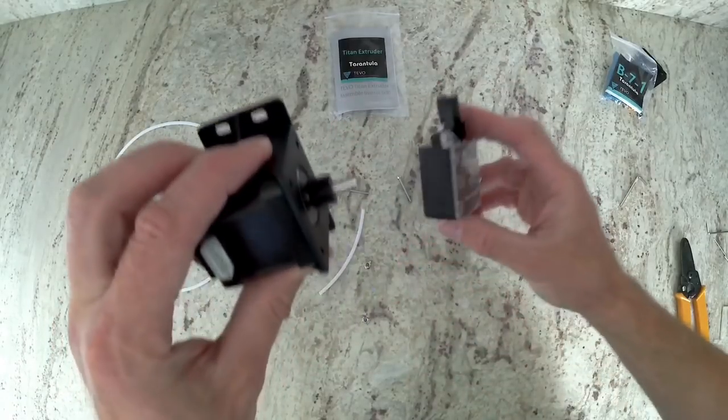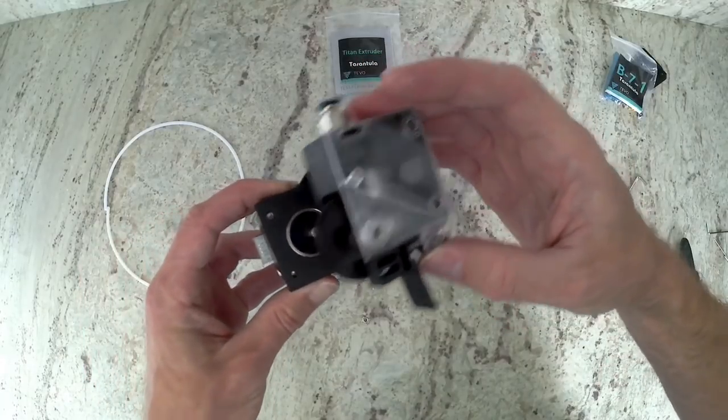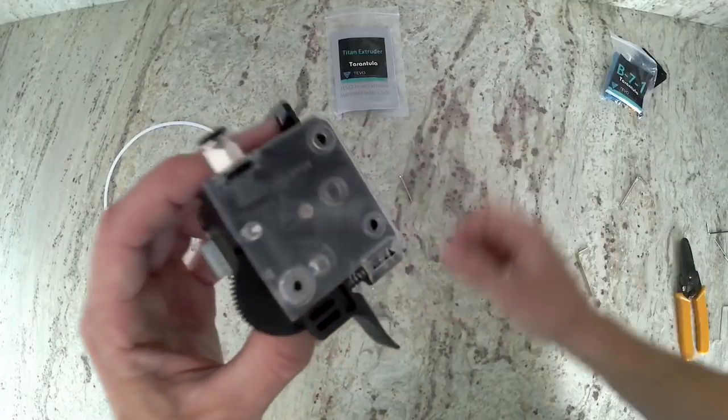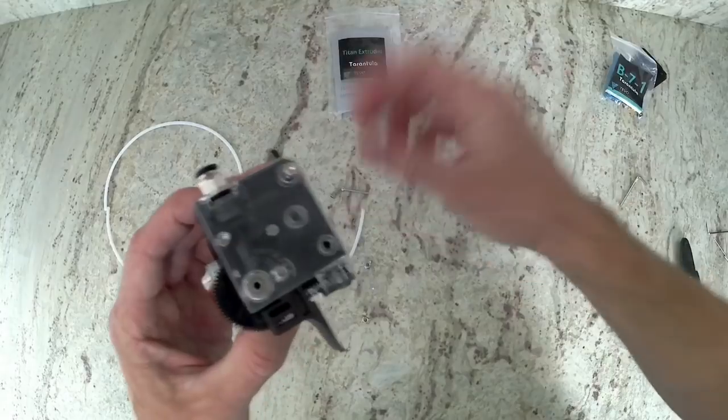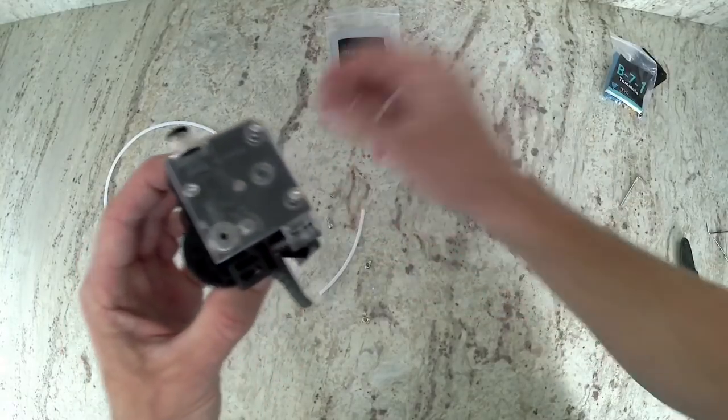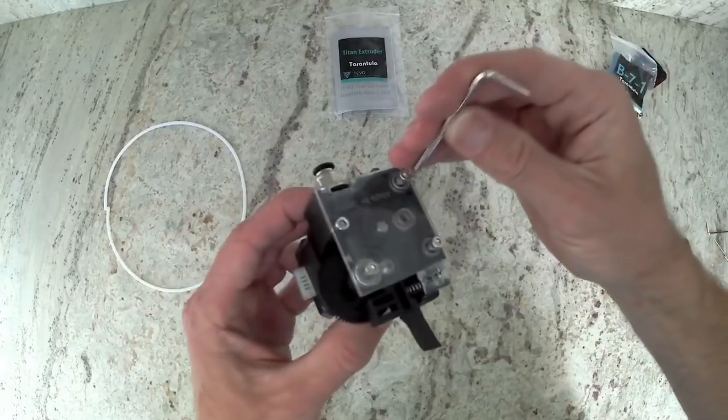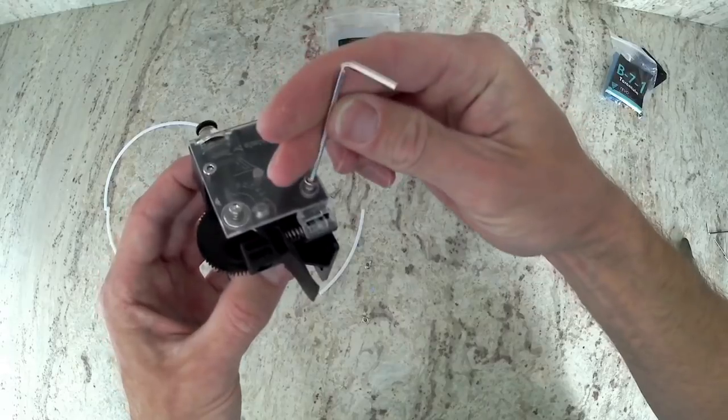After that, get the plastic mount and then the Titan assembly. Position it just like it's shown here in the video and install three of the long bolts. You're not going to want to tighten these all the way down, just tighten them enough so that they stay in place. If you tighten them too much, it can crack the clear plate and can also cause friction on the extruder.